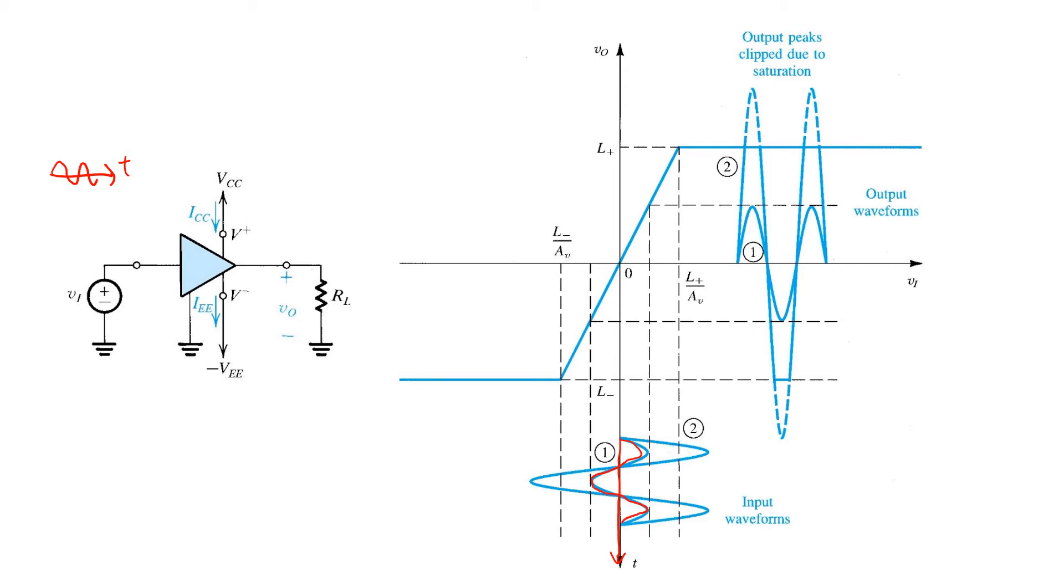So this is a small enough input amplitude that the output voltage remains within its linear limits. The amplifier output does not saturate, and so at the output, we see a linearly amplified version of the sinusoid.